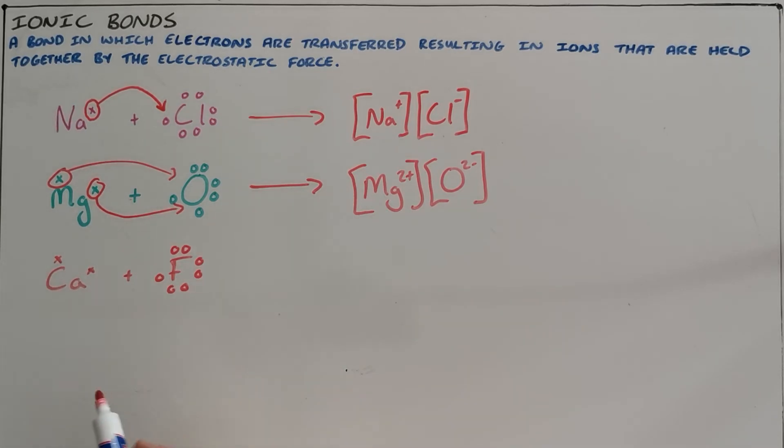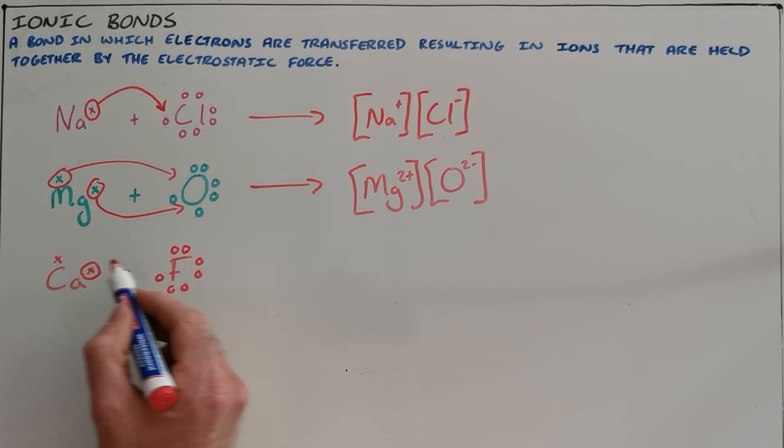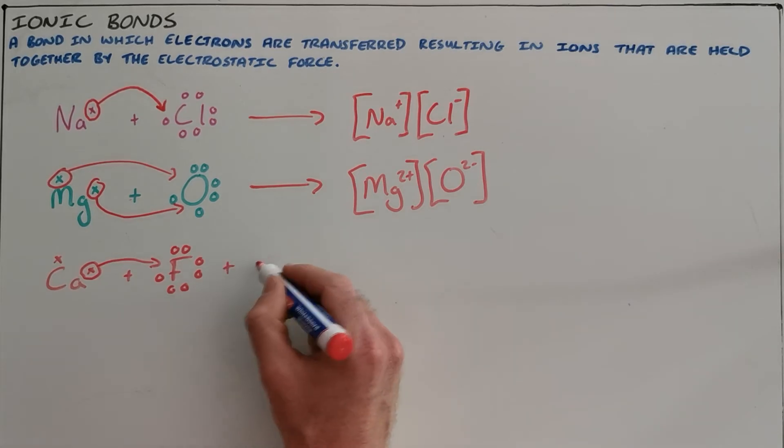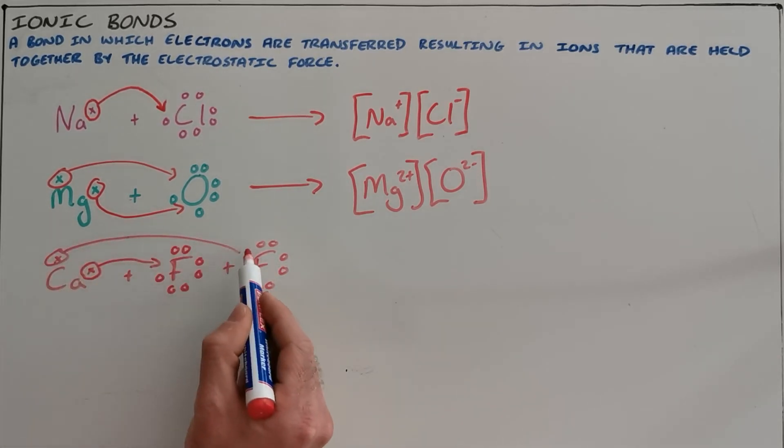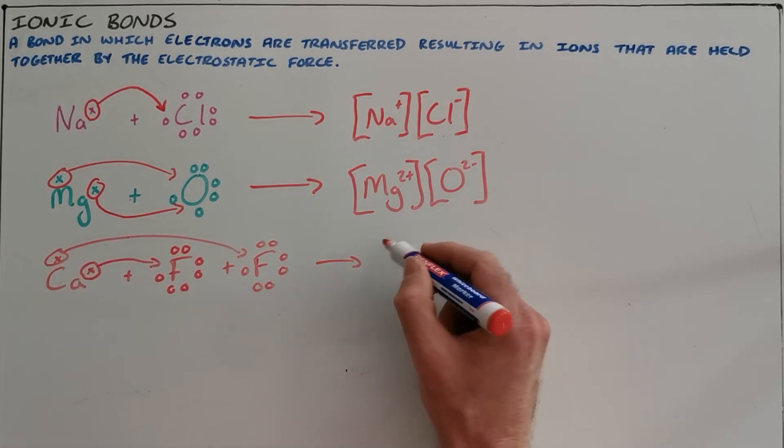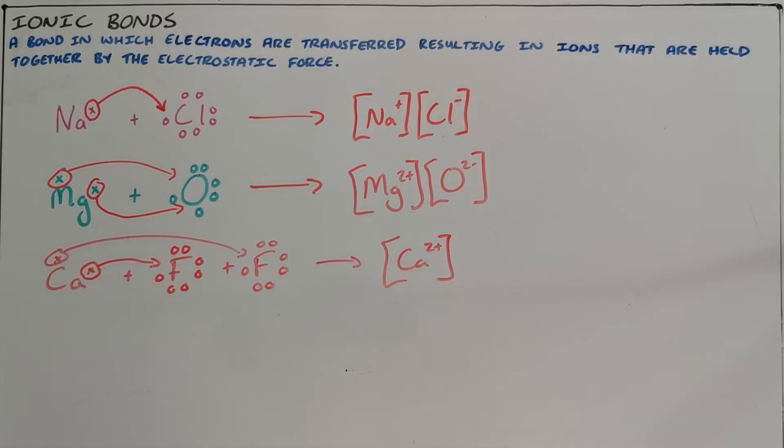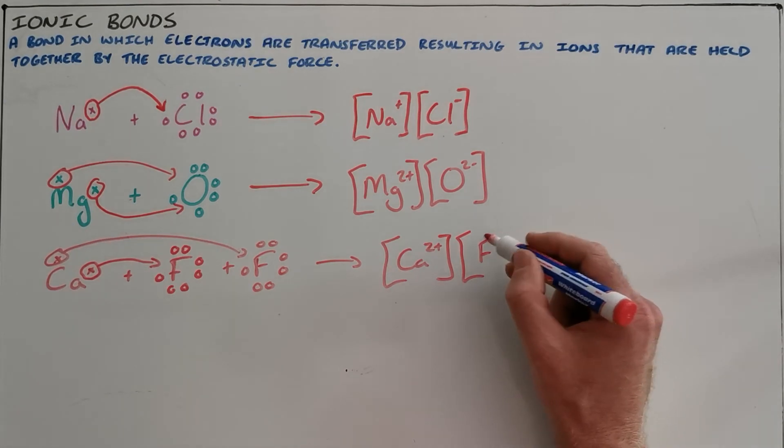Finally, it is also possible, as we can see here, where calcium has two electrons essentially to give and fluorine can only take one of those. In scenarios like this, we would find that there is always another fluorine that is present that is willing to accept that extra electron. As a result, here we form something that has a single calcium ion that has a charge of two plus.